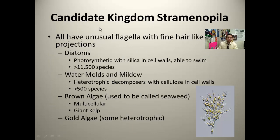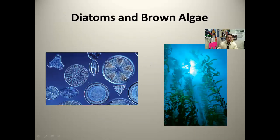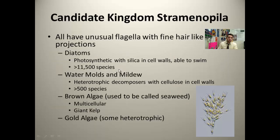The straminopola also have flagella. Within the straminopola, some very interesting organisms — one of them is the diatoms. Diatoms are very interesting because they're photosynthetic and they also have silica within the cell walls. Silica is used to make glass. Here's a picture of a diatom — you can see the glassy nature of their cell walls. Very cool looking things; they're used to make glass.